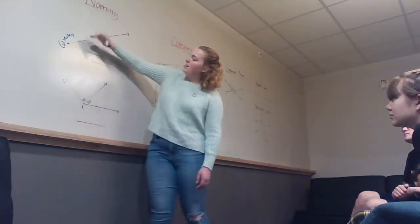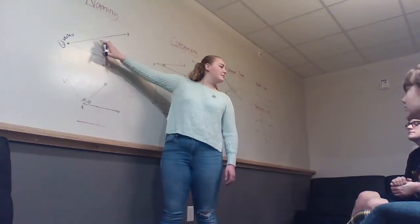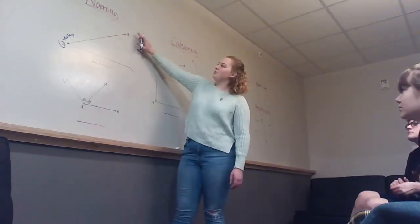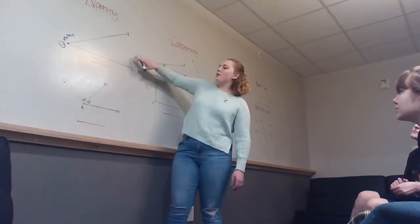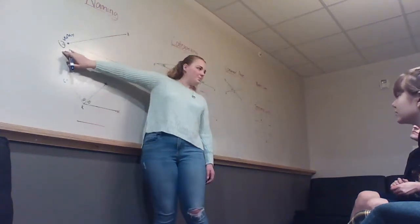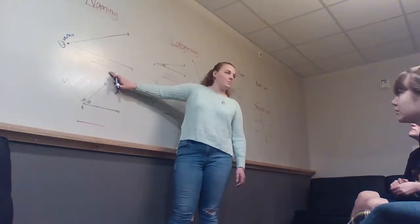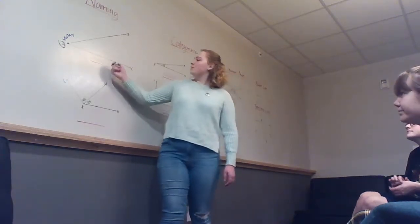When naming, the most important part is that the vertex is always in the center of the name. You can either start from this point or this part, but remember that A always has to be in the middle. So what would we name this angle? B-A-C. That's great.